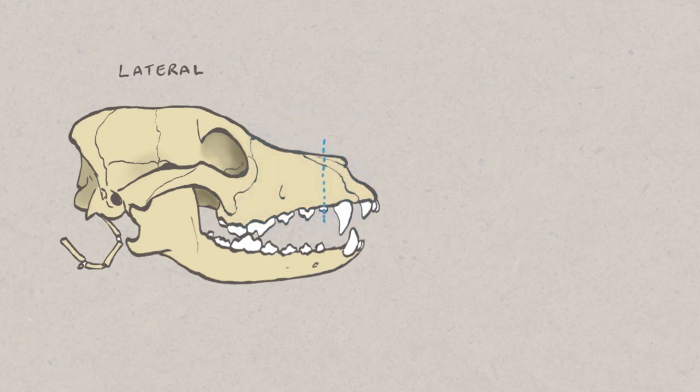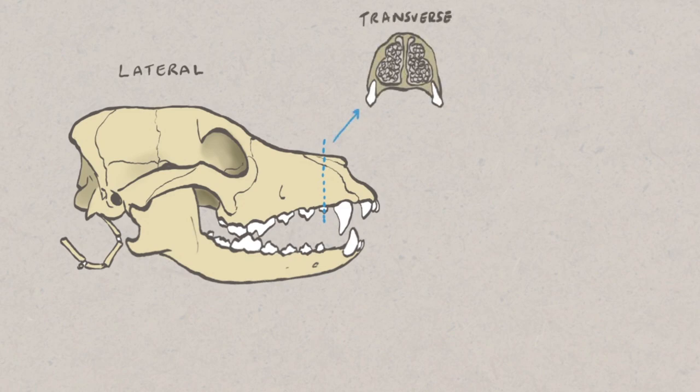This is illustrated most easily using a transverse cross-sectional view. In this view we can see that the septum is central, with many fine scrolls of bone, known as nasal turbinates or conchi, filling each of the chambers.